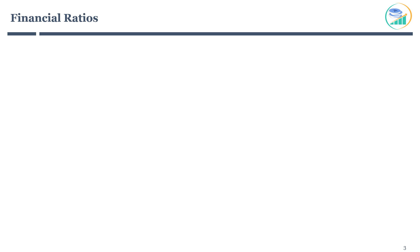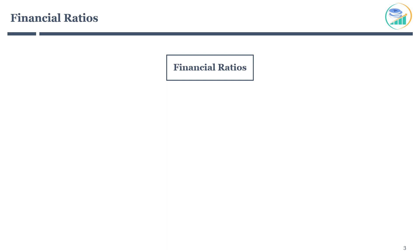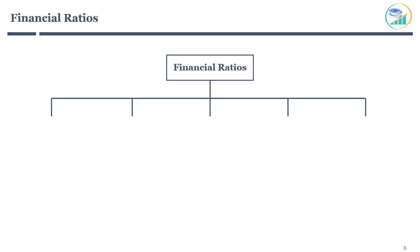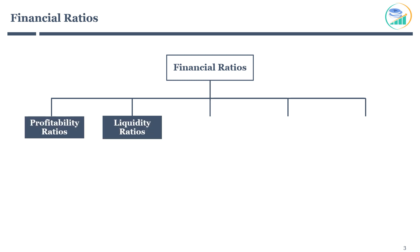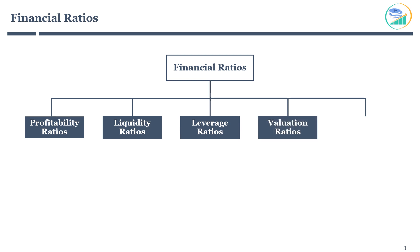It's time to understand different types of financial ratios. Broadly, financial ratios are classified into five different categories: profitability, liquidity, leverage, valuation, and operating. In reality, there are too many ratios. However, it's enough to understand a few key ratios for better investment decisions and to increase the probability of success in the long term.